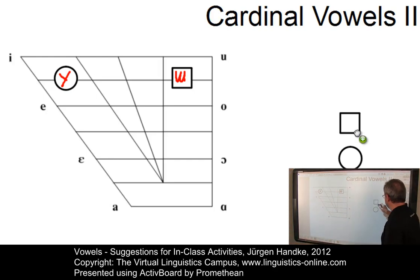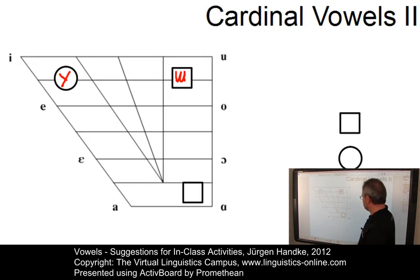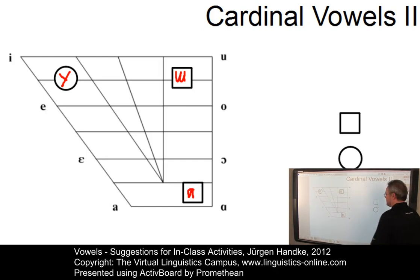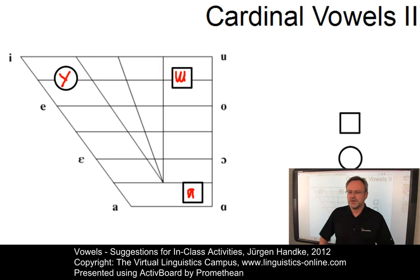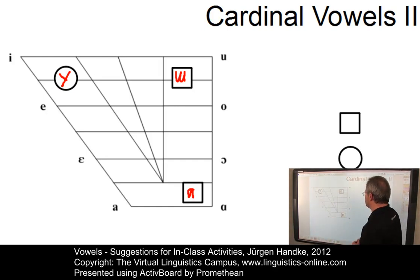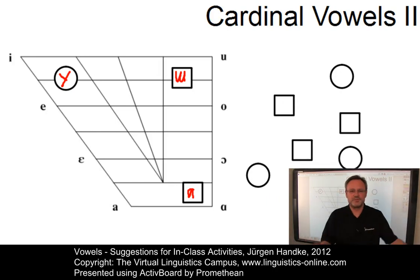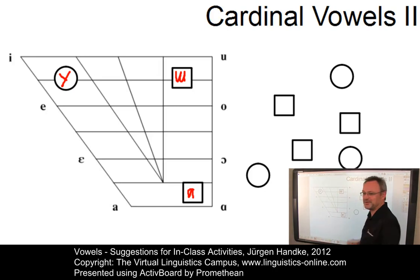Let's take a further example. Here is a vowel that can be produced in the low back region, so it's an unrounded low back vowel. The symbol would be something like this one, and the result is 'ɑ'. Depending on your time, you can do this exercise as long as you like — just prepare these symbols in advance so that you can use as many circles as you want and move them around on the board, if you have a device like this Promethean Active Board.